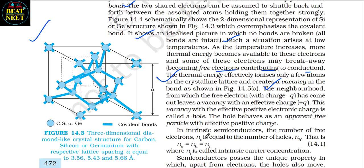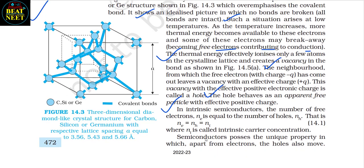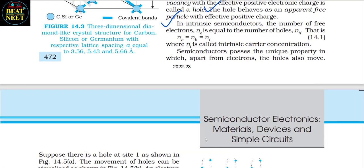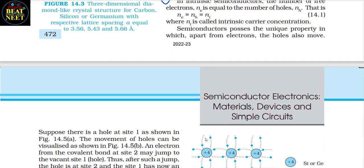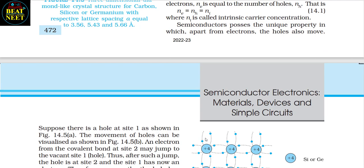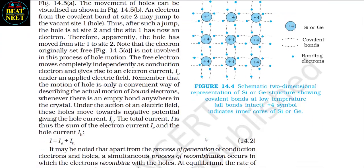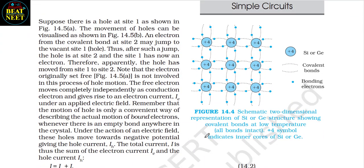The neighborhood from which the free electron (charge −q) has moved out leaves a vacancy with an effective charge +q. This vacancy with effective positive electric charge is called a hole. The hole behaves as an apparent free particle with effective positive charge. In intrinsic semiconductors, the number of free electrons ne equals the number of holes nh, i.e., ne = nh = ni, where ni is called the intrinsic carrier concentration. Semiconductors possess the unique property in which, apart from electrons, the holes also move.